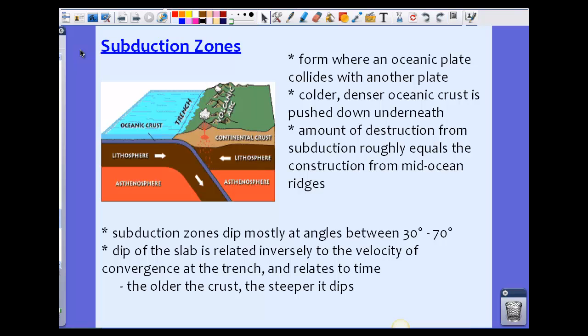Typically the colder, denser oceanic crust is pushed down underneath. The continental plate is a little bit less dense, so it's going to float more on top compared to the oceanic crust which is denser, so it's actually pushed underneath.